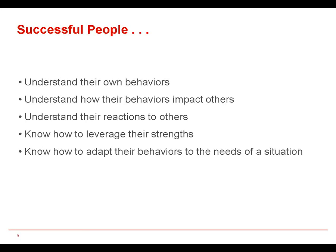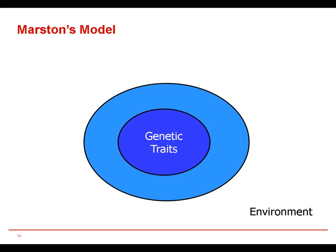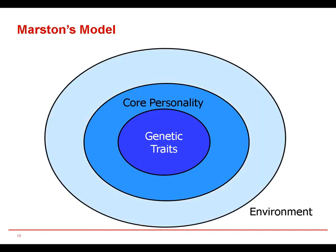Successful people know how to adapt their behaviors to the needs of a situation — we need to be adaptable and flexible. Each of us is born with genetic traits and we start interacting with our environment from birth. Over roughly the first five to six years of life, we develop our core personality. Then we continue developing what are called behavioral tendencies: dominant, influencing, steady, and cautious. That's DISC.